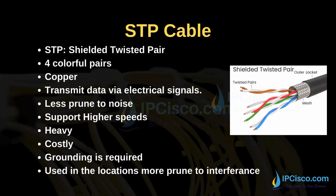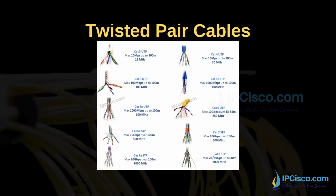Another copper twisted pair type is STP, shielded twisted pair. There are four pairs in these cables, but there is also a shield over the pairs. STP cables are less prone to noise, support higher speeds, but are heavier and more costly than UTP. An extra ground is needed for this type of cable. STP is used in locations more prone to interference. There are different types of UTP and STP cables, like Category 5, Category 6, Category 7, Category 8, etc. On the screen, you can see the detailed properties of these copper twisted pair cables.